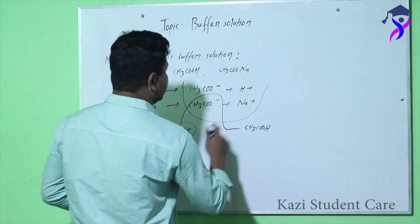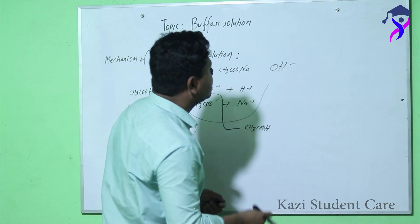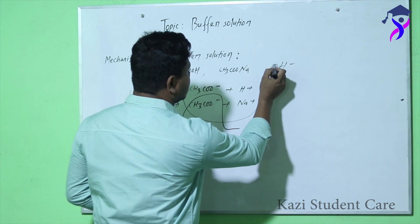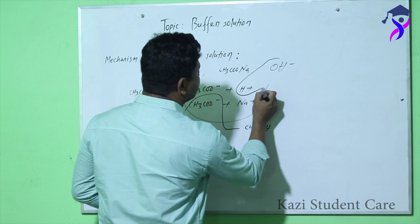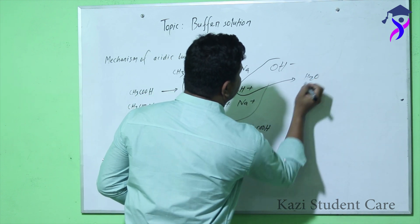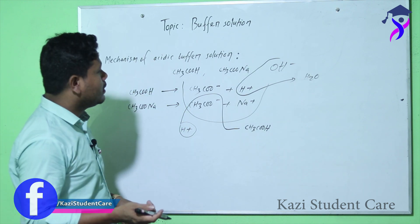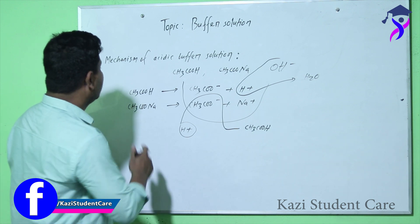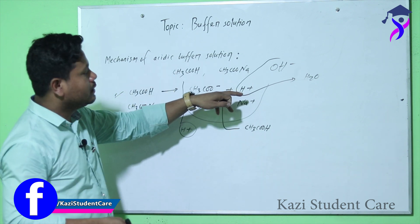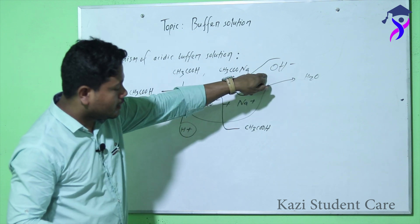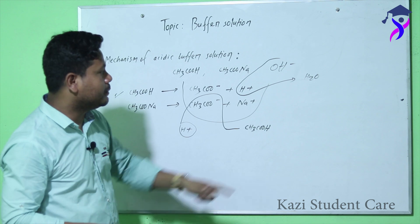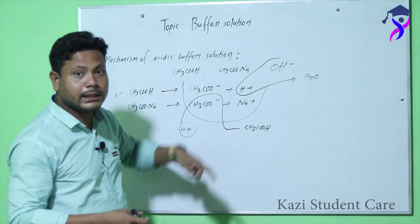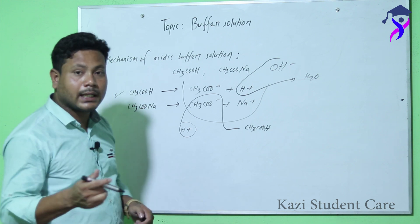Again, if we add a small amount of base — base means OH⁻ ions — then the OH⁻ ions react with the H⁺ ions of the buffer solution and produce water. The concentration of H⁺ ions would become less, but this does not happen. Because acetic acid is a weak acid and ionizes partially, the same amount of H⁺ ions is produced again. That is why the concentration of H⁺ ions remains the same and the pH value also remains the same. This is the mechanism of the acidic buffer solution.